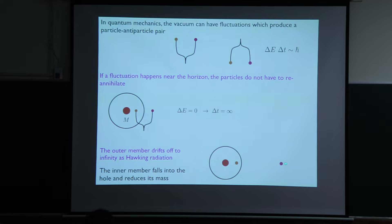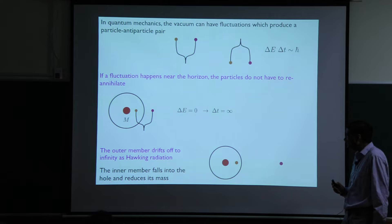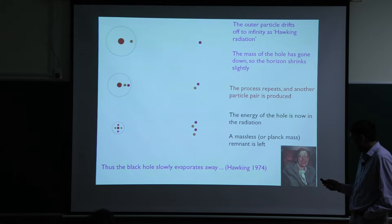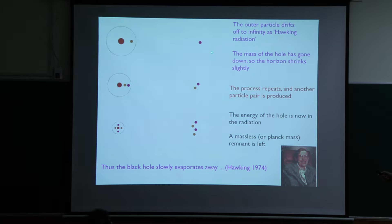We've already seen that the energy of a particle inside the horizon can be net negative, while outside it is net positive. So you can arrange things so the total energy of the pair is actually zero. If it is zero, delta T is infinity — these two particles are on-shell, it doesn't cost any energy to make them, so the virtual fluctuation can just stay there as a real on-shell fluctuation. The outer member can drift off to infinity — that's called Hawking radiation — and the inner member just falls into the black hole. Energy is beautifully conserved: the outgoing particle carries positive energy, and the infalling particle has net negative energy, so the total mass of the black hole decreases. This was the discovery of Hawking in 1974.